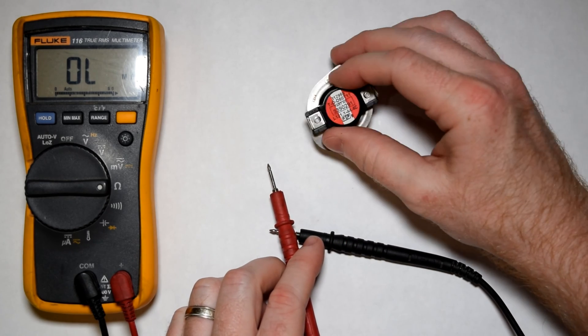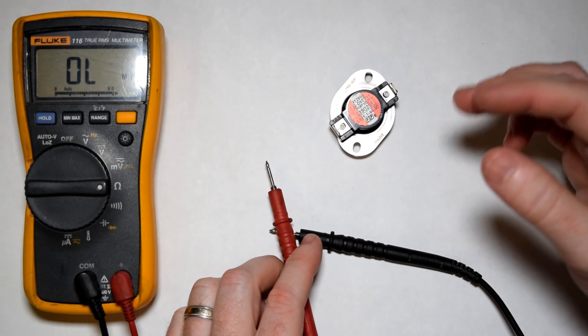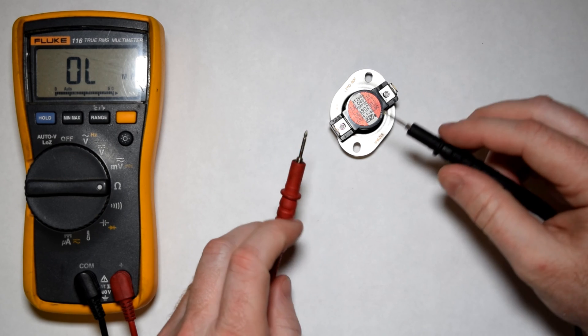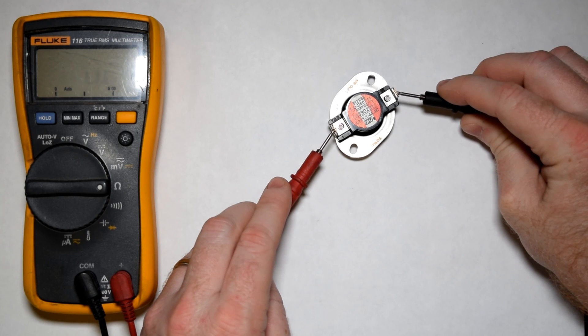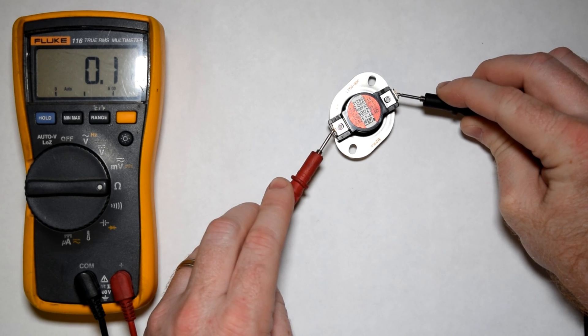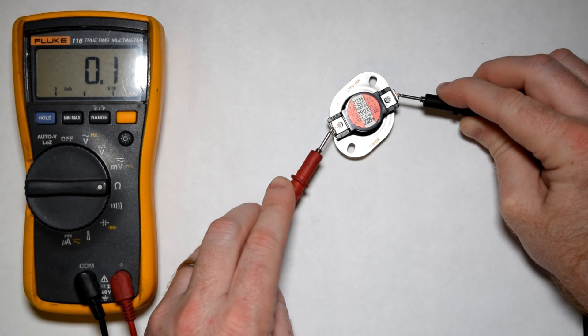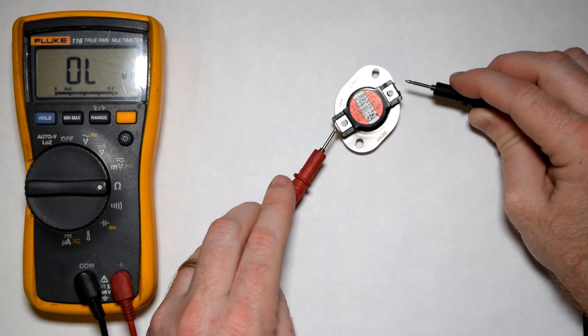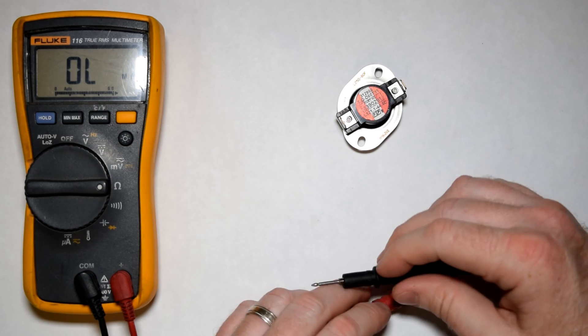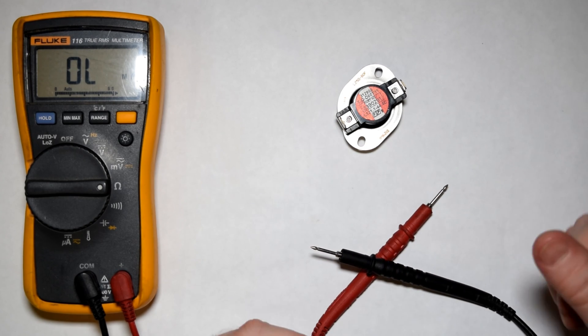So this is a cycling thermostat for a dryer. Essentially it's an on-off switch based on temperature. So right now you do have resistance, meaning that electricity can flow through this part. Once it gets to a certain temperature, 121 degrees Celsius, you'll hear a click. This will open up, and then basically it goes back to an open circuit, cutting the power to your heating element for your dryer.